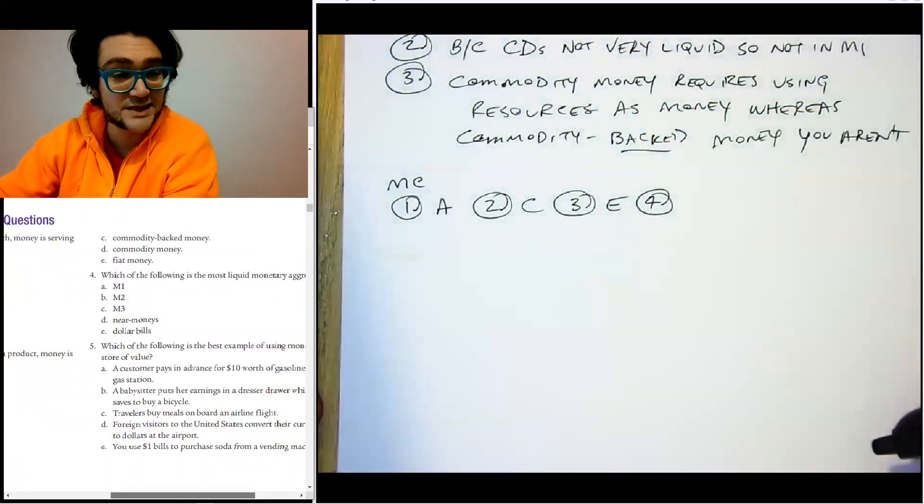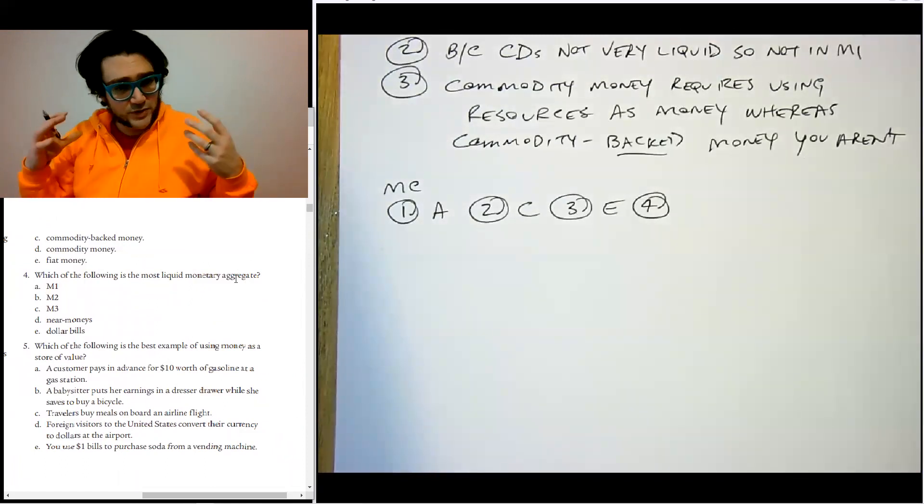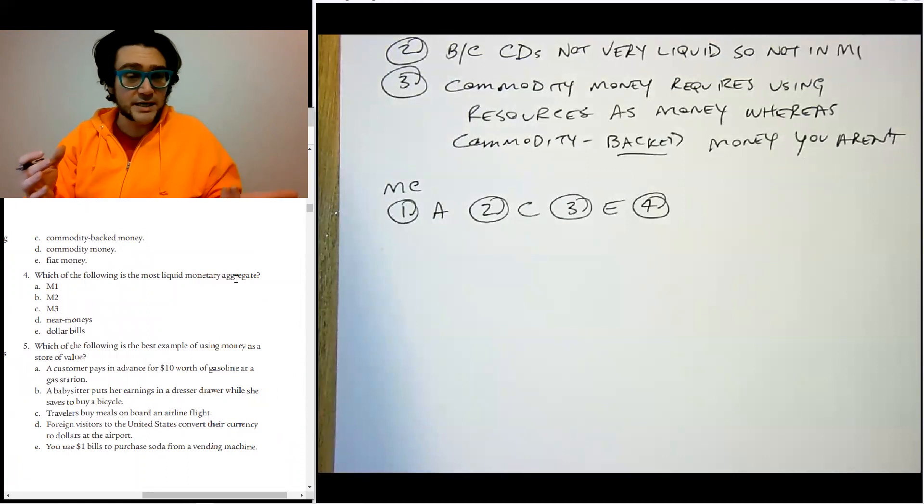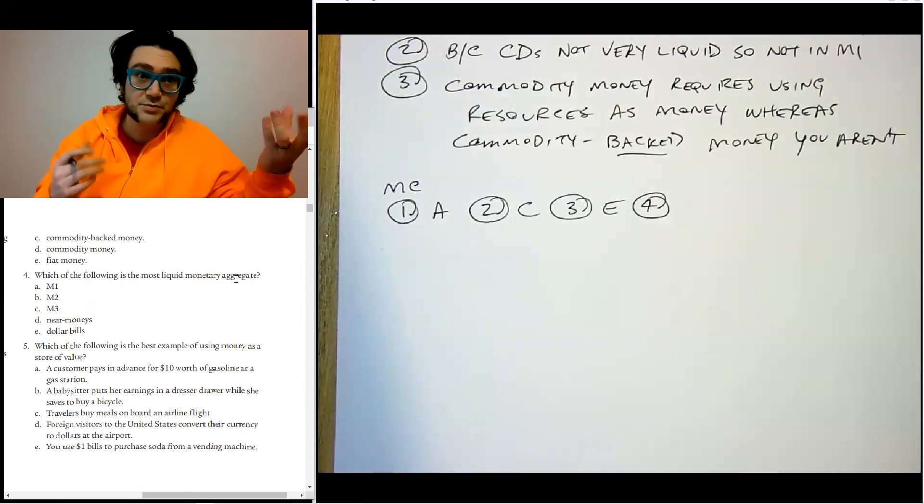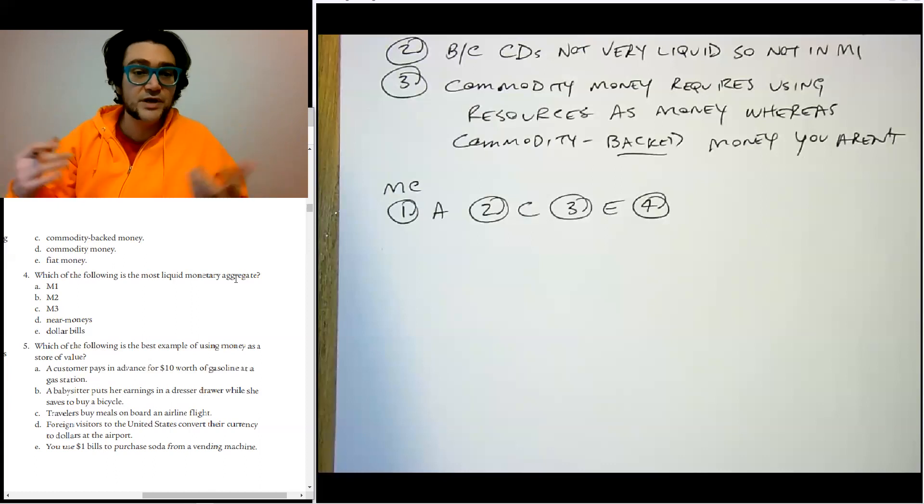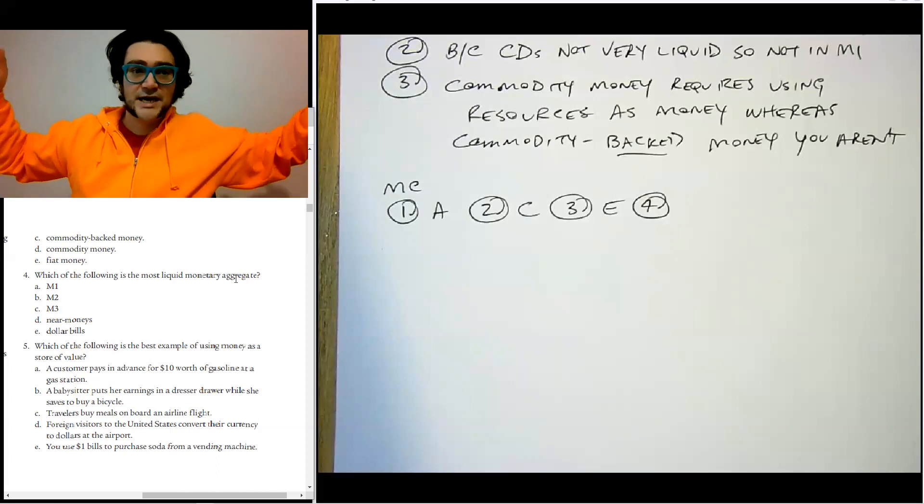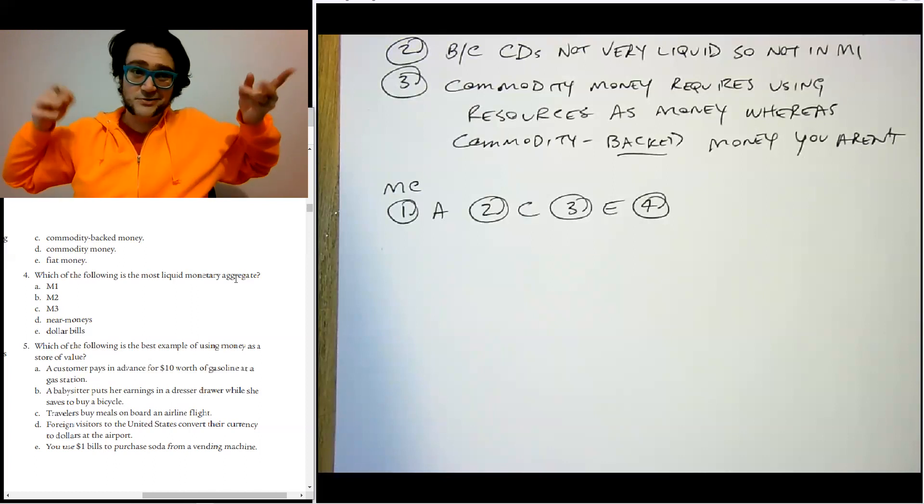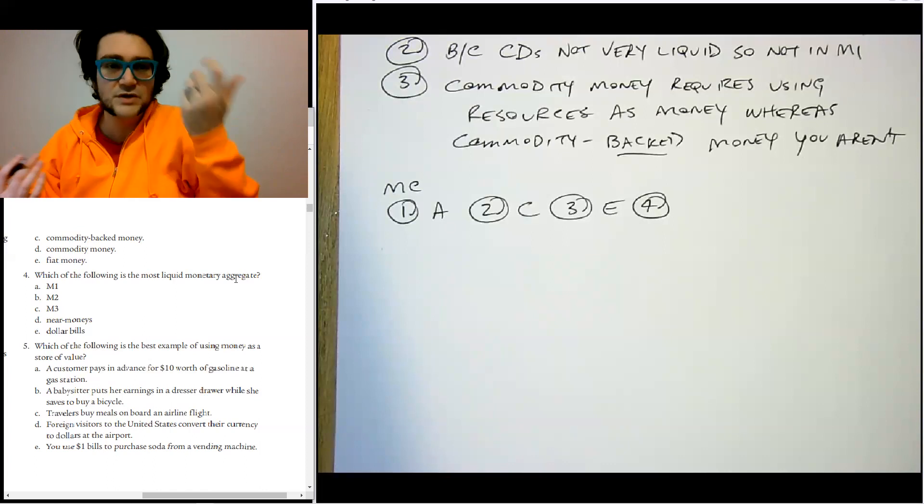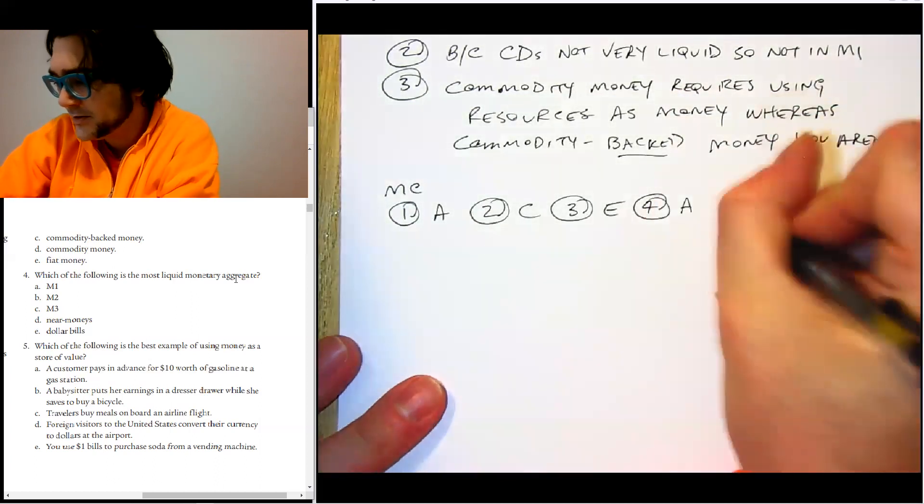Number four, which of the following is the most liquid monetary aggregate? Monetary aggregate, if you read the section, you'll know what that means. It just means a money measure, money supply measure. So the most liquid would be M1. Students will sometimes get confused and they'll choose dollar bills here, but that's not a monetary aggregate. That's just one type of physical currency. If we had said M0 instead of dollar bills, then M0 would be the clear winner. But we only have M1, M2, and M3. Those are the only monetary aggregates listed here. And M3, just for what it's worth, M3 doesn't even exist. We used to count a way bigger amount of money called M3. So our correct answer here is A.